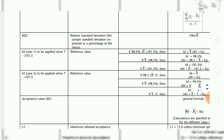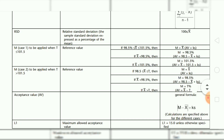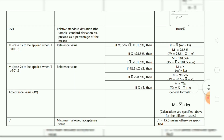There are two cases: Case 1 and Case 2. Case 1 is to be applied when t is not greater than 101.5%. If 98.5% is not greater than x-bar and x-bar is not greater than 101.5%, then m is equal to x-bar and AV is equal to ks. If x-bar is not greater than 98.5%, then m is equal to 98.5%.